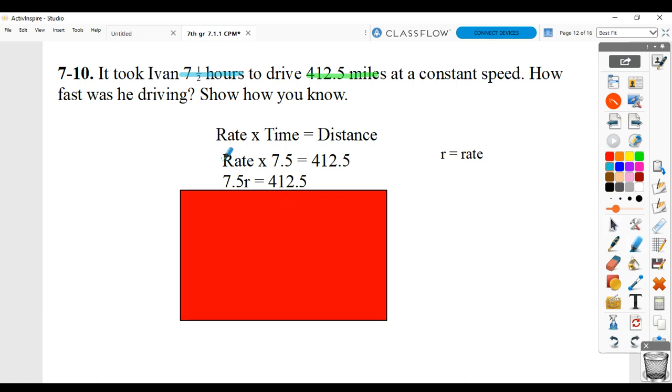Basically we're substituting our variable term for rate. Then we have 7.5R equaling the total distance. This is set up as a one-step algebraic equation. So you would divide both sides by the coefficient. In other words, divide it by the time.